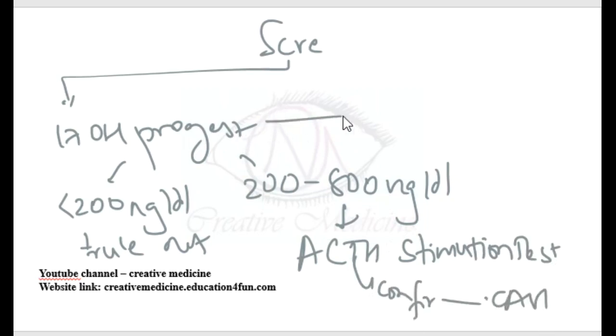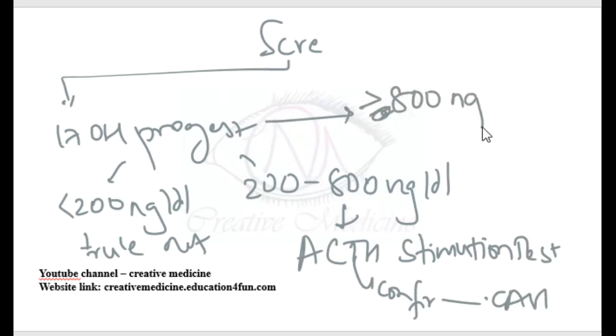If 17-hydroxyprogesterone levels are more than 800 ng per deciliter, then it confirms the diagnosis of congenital adrenal hyperplasia.